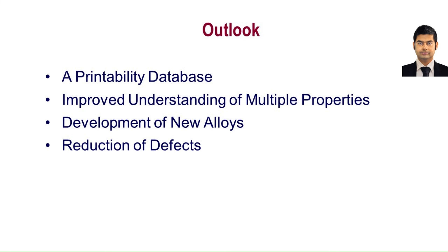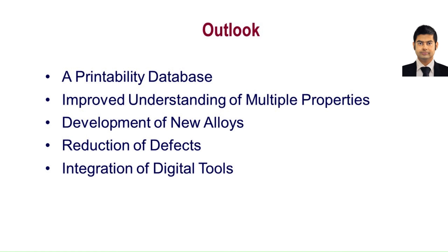New alloys and functionally graded materials will continue to be developed for AM. Additively manufactured parts often have defects that affect properties and serviceability. Post-processing techniques help, but they increase the cost of parts. Mechanistic modeling and machine learning offer a promising path to control defects and enhance serviceability. Finally, when we combine mechanistic models with experimental data, we get a solid scientific foundation for selecting the right process parameters.